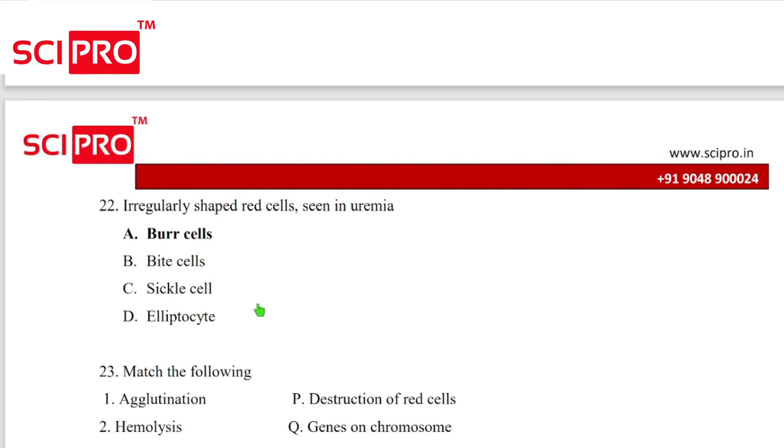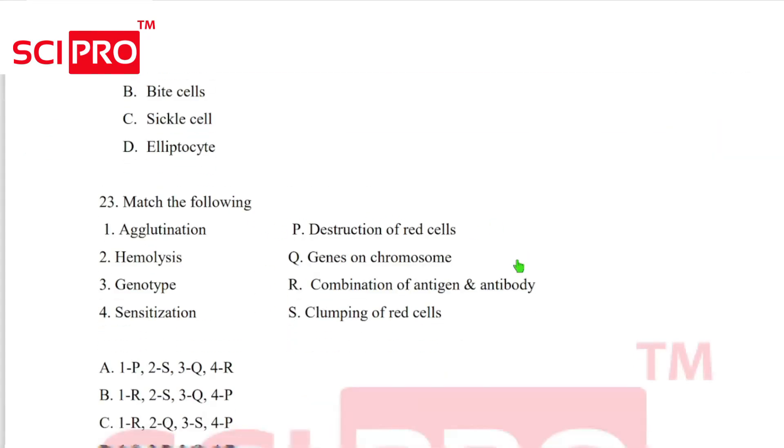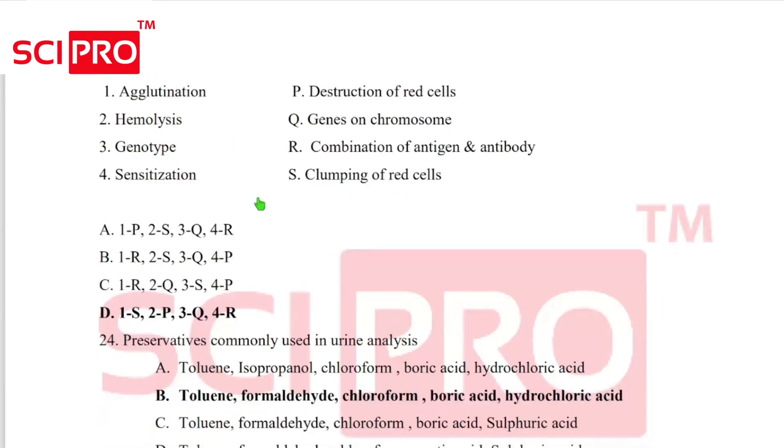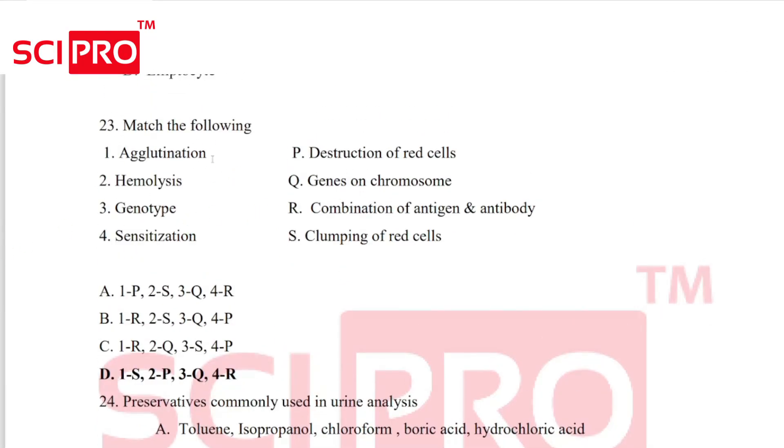Question number 22, irregularly shaped red cells seen in uremia, burr cells. Question number 23, match the following. Agglutination, clumping of red cells. Sensitization, combination of antigen antibody.